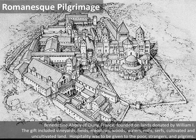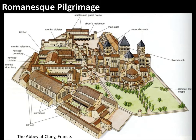One of the more famous places for lodging was the Abbey of Cluny in France. The gift to create this abbey included vineyards and fields, meadows and woods, waters and mills, serfs, and cultivated and uncultivated land — a self-contained city. The rule stated that hospitality was to be given to the poor, to strangers, and to pilgrims. Here, with all the buildings identified, you see churches, residences, stables, guest houses, places for monks, kitchens, and dormitories — multiple specialized places for people within this remarkable abbey.